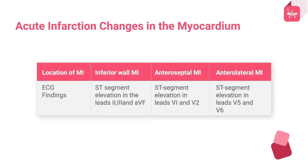This table describes the changes occurring in various regions of the myocardium having an acute infarction, which is used to identify the affected coronary artery. The ECG findings in inferior wall MI show ST segment elevation in leads II, III, and augmented vector foot (aVF).